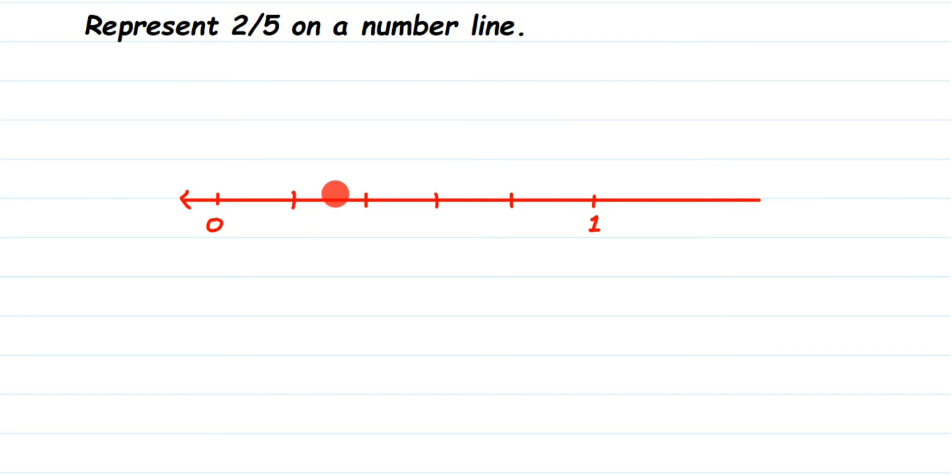Now we're going to start naming it. So the first one is 0, which is nothing but 0 by 5. The next will be 1 by 5 because out of 5 equal parts this is the first part. And this is second one, so this will be 2 by 5, this is 3 by 5, 4 by 5.